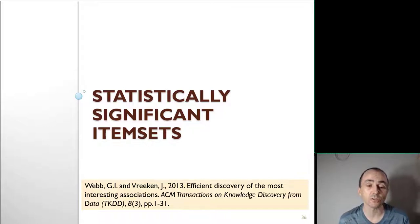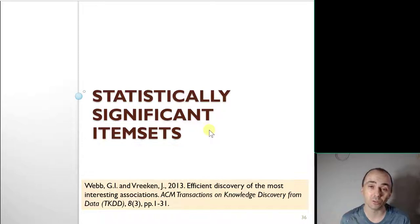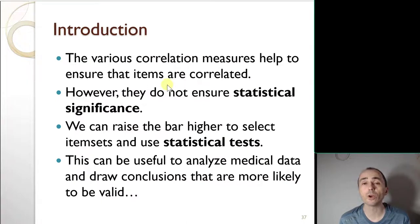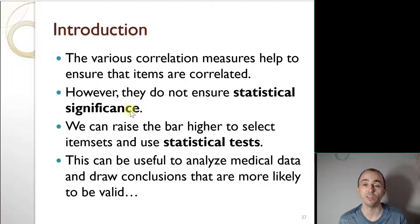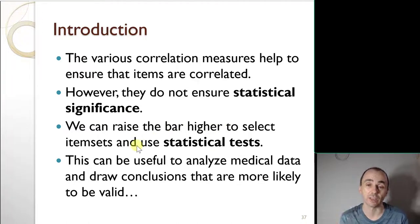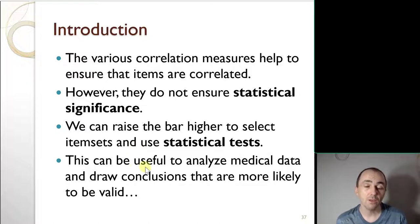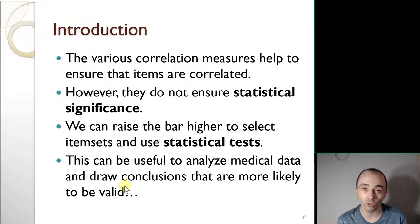Besides correlation measures, we could also try to find item sets that are statistically significant. While the bond and all confidence ensure items are correlated, they don't check for statistical significance. If you want to raise the bar — for example analyzing medical data and drawing significant conclusions — we need to include statistical tests to make sure item sets are really significant from a statistical point of view.